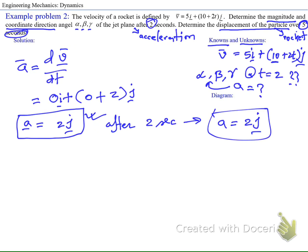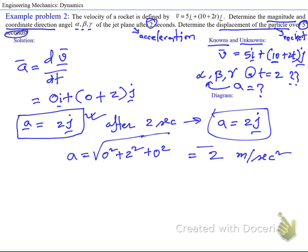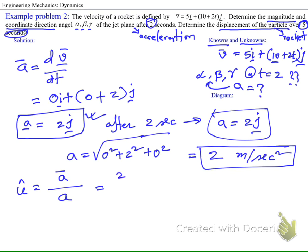Now let's find the magnitude. The i component is zero, the j component is 2, and the z component is also zero. So the magnitude of the acceleration is 2 meters per second squared. To find the unit vector, we divide the vector form of the acceleration by its magnitude: 2j divided by 2, which gives us 1j. So the unit vector is j.